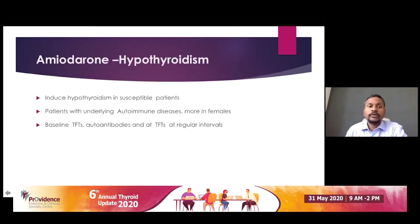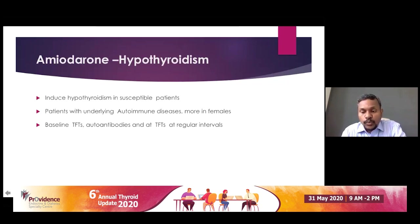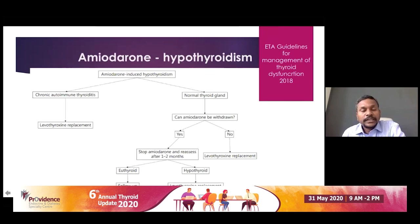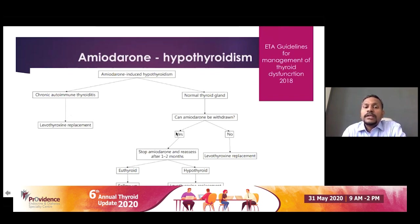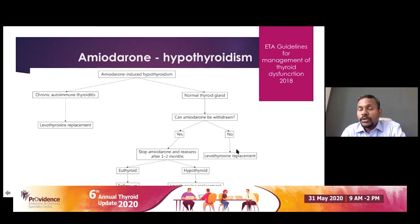Amiodarone-induced hypothyroidism is usually seen in patients who already have autoimmune disease or are more prone to autoimmune disease, such as females. The protocol is to do a baseline thyroid function test and autoantibodies at baseline and monitor thyroid function at regular intervals, say once every two months. Per the European Thyroid Association guideline: if the patient already has chronic autoimmune thyroiditis, they may require levothyroxine treatment longer-term. For a normal gland, if amiodarone can be stopped, stop it for one to two months and reassess — if euthyroid, no treatment needed; if hypothyroid, treatment is required. For patients who cannot withdraw amiodarone, continue levothyroxine alongside it.